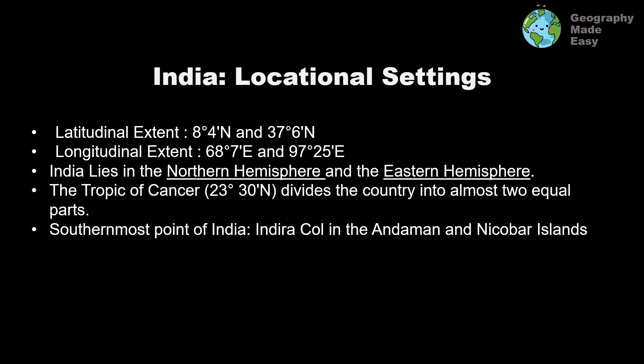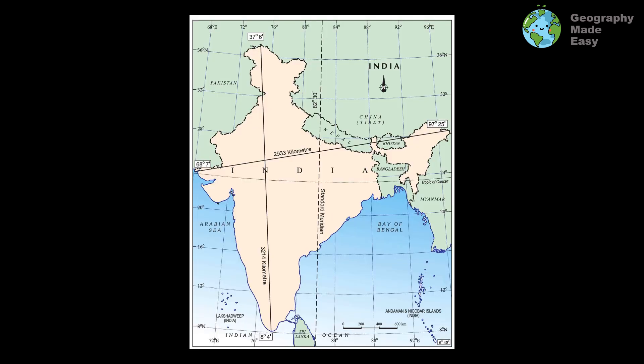The Tropic of Cancer divides the country into almost two equal halves. We will look at the map to understand this. The southernmost point of India is called Indira Coal, which is present in the Andaman and Nicobar Islands. These points are very important from the perspective of map pointing. Looking at the map, this is where Indira Coal is located, and the Tropic of Cancer is dividing India into more or less two equal halves.